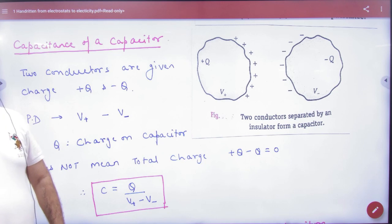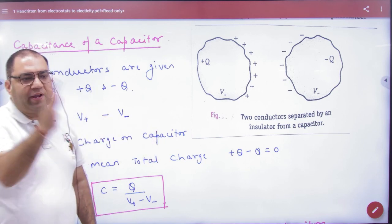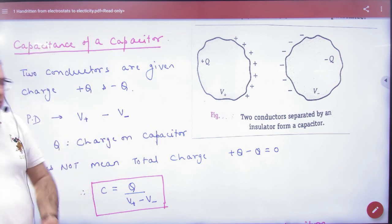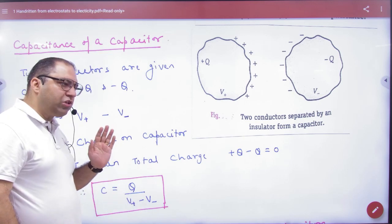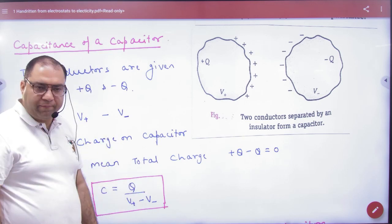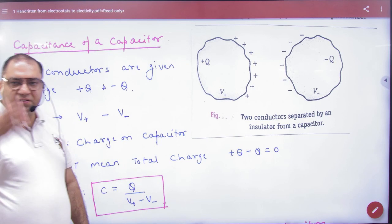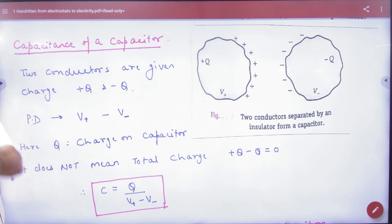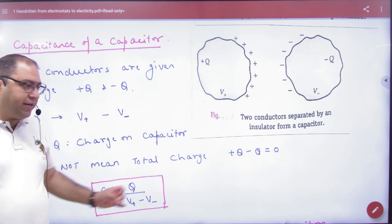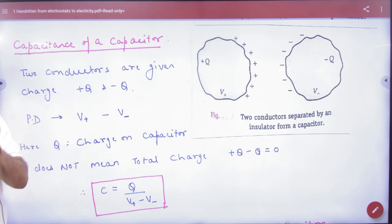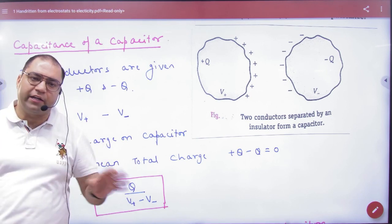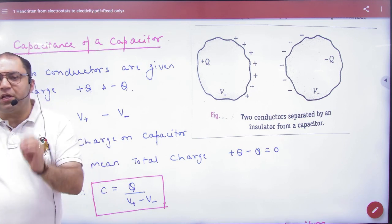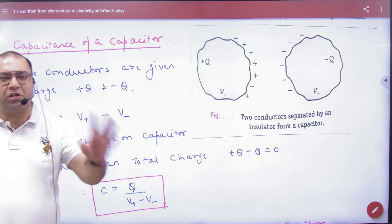In potential difference, we take small potential minus large potential — this is the rule. Capacitance is not negative; capacitance is a positive quantity. Remember that positive charge gives positive potential and negative charge gives negative potential. Positive potential is always greater than negative potential — for example, 2V is greater than minus 10V.